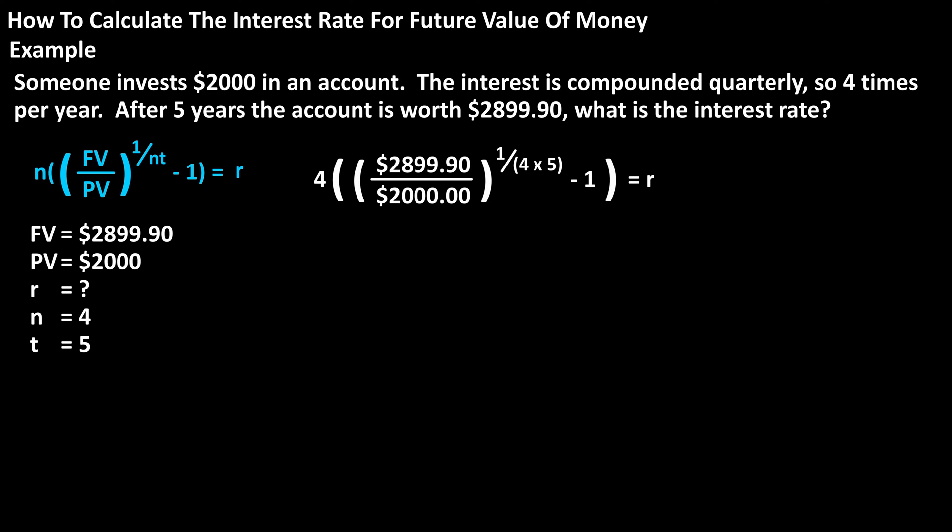Using the formula, we have R, the interest rate, equals 4 times the quantity $2,899.90 divided by $2,000 raised to 1 divided by 4 times 5 minus 1.